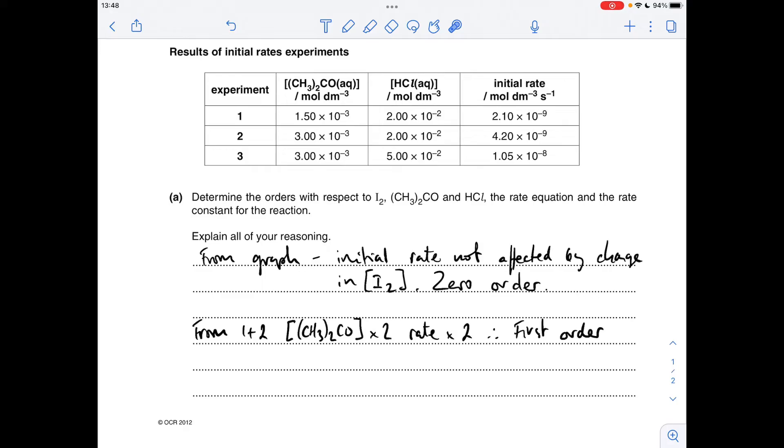So it must be first order with respect to propanone. So I would always get my students to just write it up very simply like this, but be very very clear about how you've established your order. So quote which experiment you've used, say what's happened to the concentration of the thing that's changed, say what's happened to the rate, and then put your order in. You don't have to write a paragraph, literally that line does everything you need.